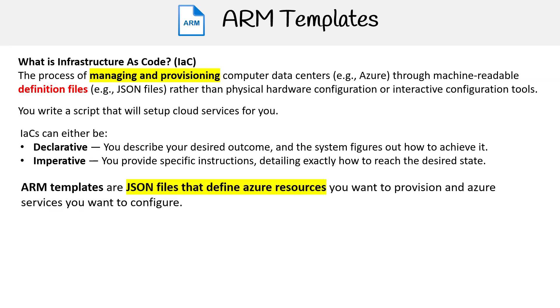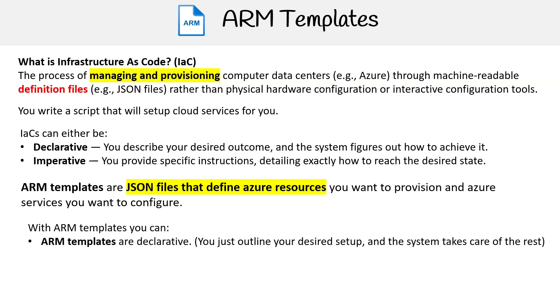ARM templates are JSON files that define Azure resources you want to provision and Azure services you want to configure. With ARM templates you can ensure a declarative approach, meaning you merely define your intended setup and the system handles the rest.